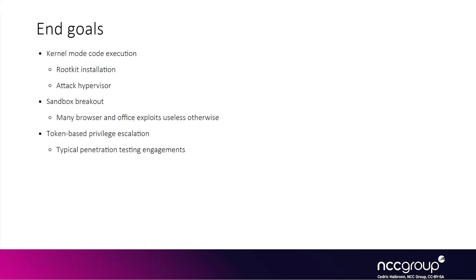So typically the end goal is either to get code execution in the kernel or to do a data-only attack. A lot of the time nowadays, the goal is sandbox breakouts because exploits people are using are first getting code execution into the browser or other client-side applications that are sandboxed. The sandbox breakouts might involve getting kernel code execution — for instance, getting a ROP chain executed in the kernel or shellcode executed in the kernel, since that basically gives you any capability you want, such as installing a rootkit or attacking the hypervisor or targeting any privileged userland process like LSASS.